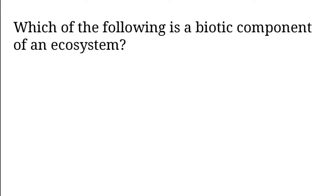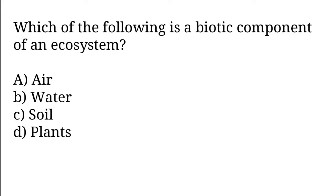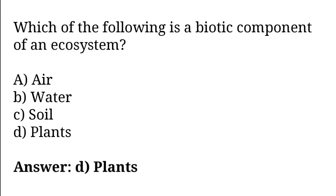Which of the following is a biotic component of an ecosystem? Options: Air, water, soil, plants. So the correct answer is option D. Plants is a biotic component of an ecosystem.